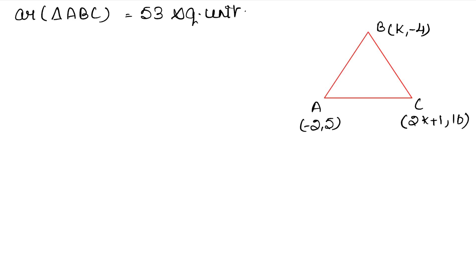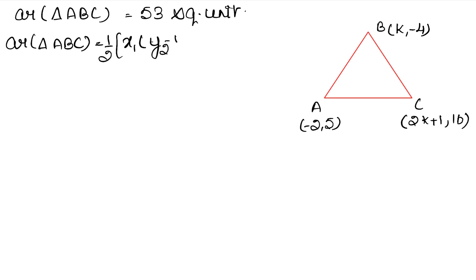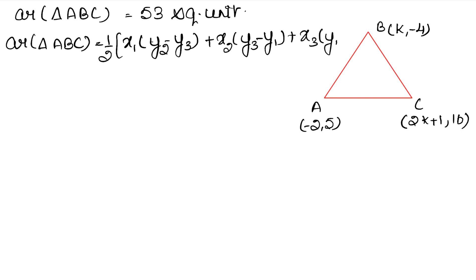हमारा area का formula होता था: Area of triangle ABC = 1/2 into |x1(y2 minus y3) plus x2(y3 minus y1) plus x3(y1 minus y2)|. तो area हमें 53 दे रखा है, 1/2 as it is।